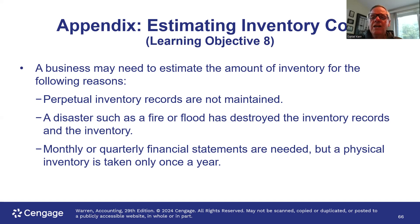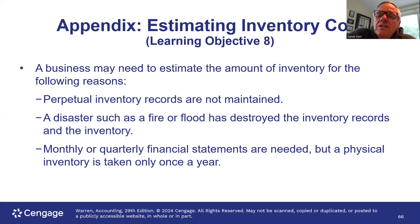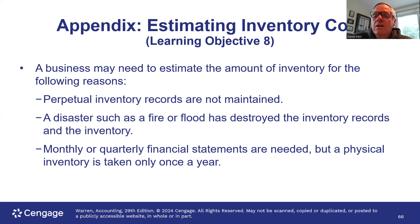There are two different methods to do this: the retail method and the gross profit method. Both are based on the relationship between the cost of the inventory and the sales price of the inventory. Under these two methods, once we know what that relationship is, we can estimate the cost of the ending inventory.